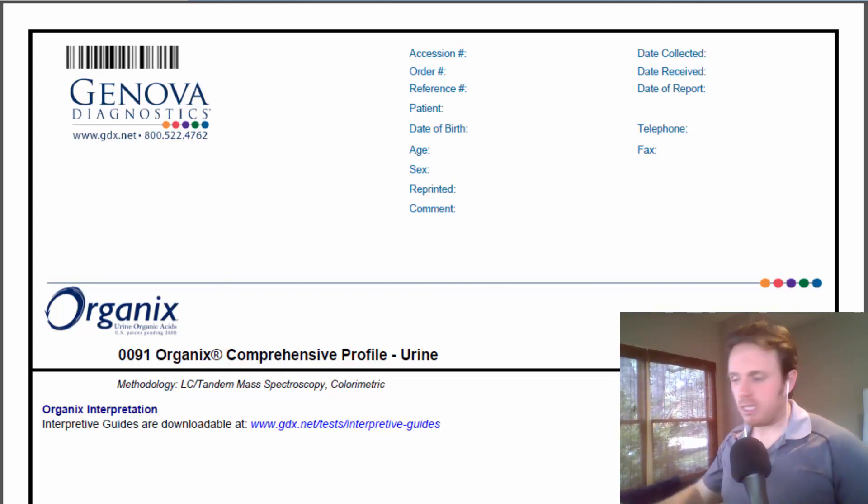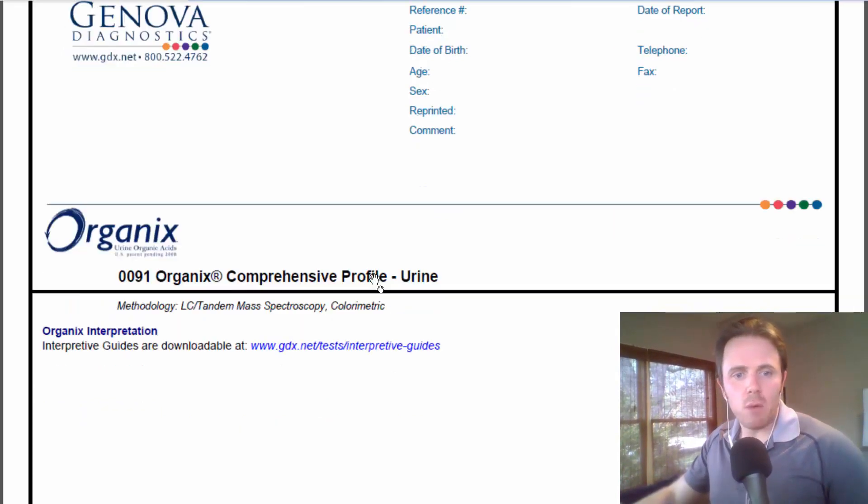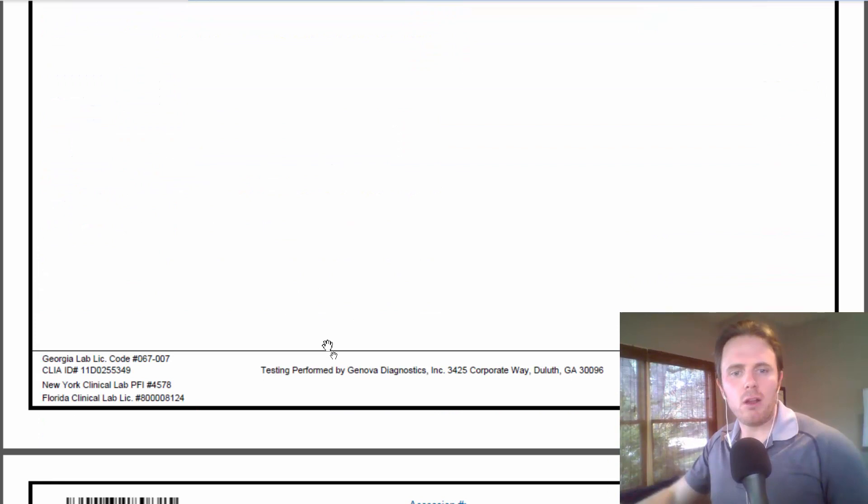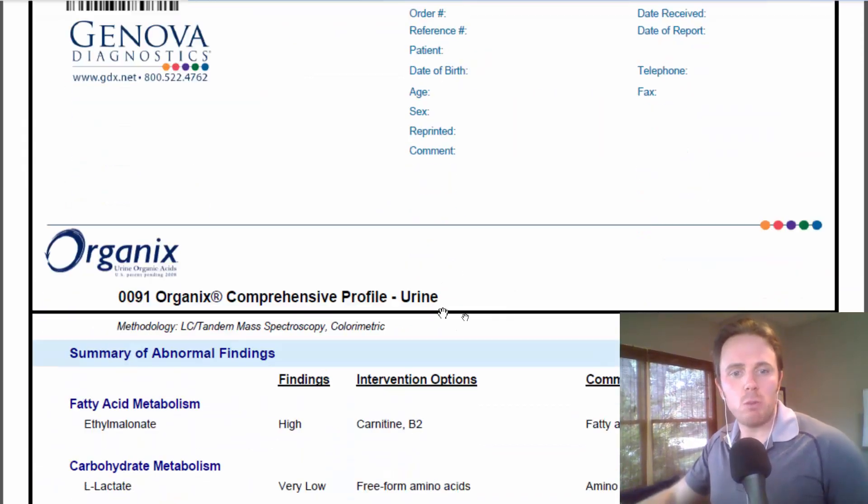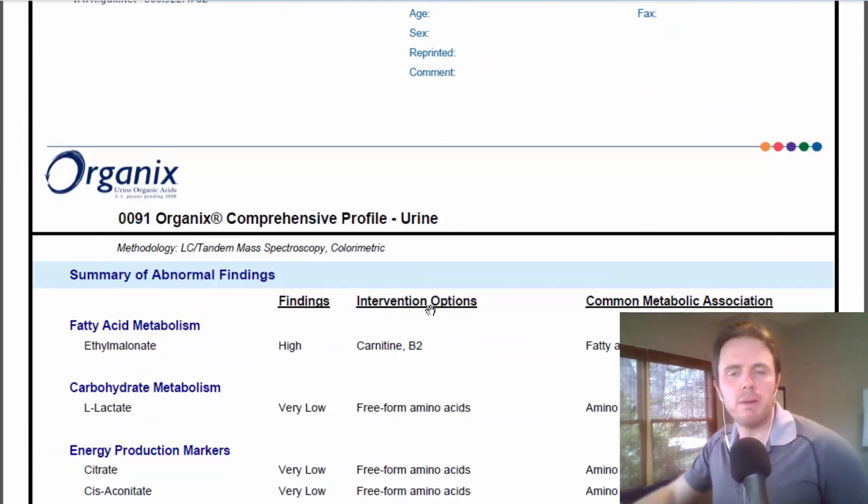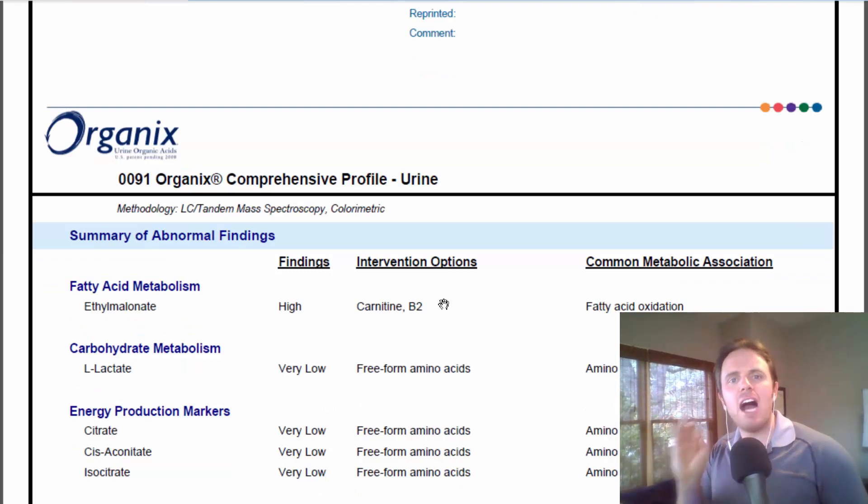Now when you look at these tests, you'll see a test on screen here, and we'll go through it. Here's the interpretive guide, but we can go through and actually look at the summary of abnormal findings and go through what everything means. But one by one, the big five things, because we always get to the root cause, what's the underlying cause of why these organic acids might go out of balance to begin with?